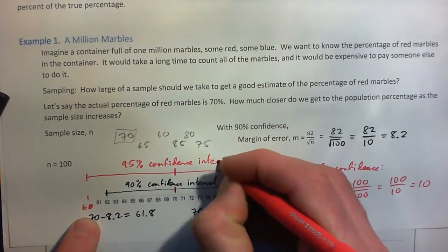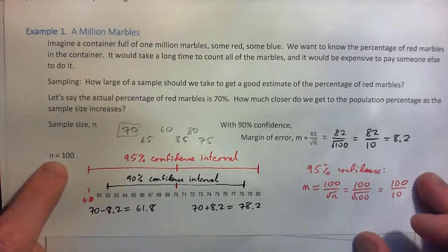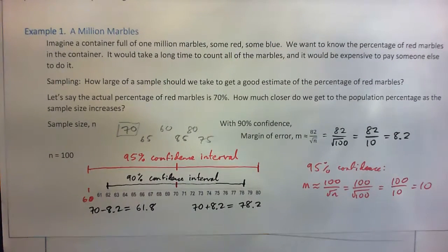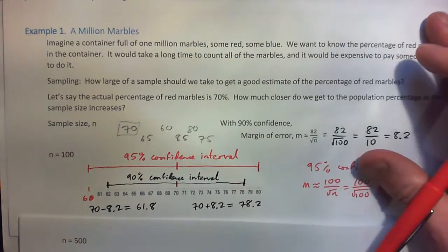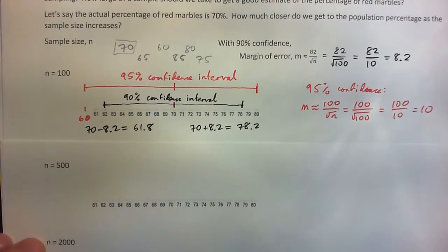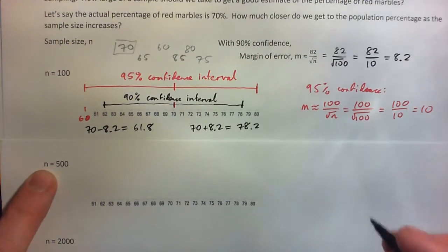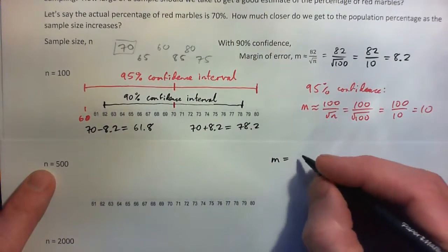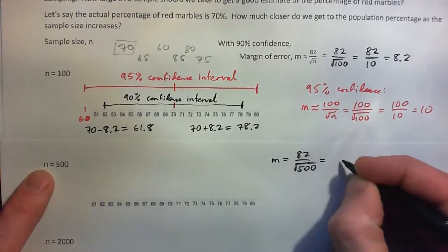One thing that strikes me is that a sample size of 100 isn't very good really. We want a bigger sample if we really want a better estimate. If you're okay with that margin of error, fine, but we might want a better estimate. So let's see what happens when our sample size is 500. We calculate the margin of error for the 90% confidence interval: 82 over the square root of 500. Plug that into your calculator — what do you get?